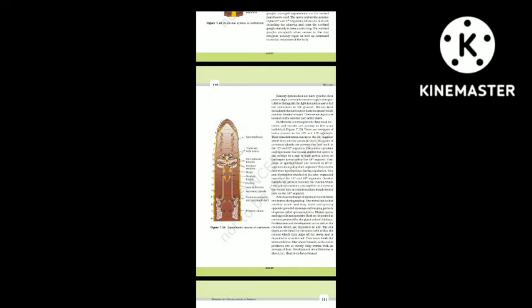Earthworm is hermaphrodite (bisexual): testes and ovaries are present in the same individual. There are two pairs of testes in the 10th and 11th segments. Their vasa deferentia run up to the 18th segment where they join the prostatic duct. Two pairs of accessory glands are present (one pair each in segments 17 and 19). The common prostate and spermatic duct (vasa deferentia) opens to the exterior by a pair of male genital pores on the ventro-lateral side of the 18th segment. Four pairs of spermathecae are located in segments 6 to 9, one pair in each segment; they receive and store spermatozoa during copulation.